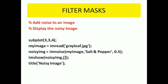Next, here we are adding noise to that image. We are applying salt and pepper noise with a noise density of 0.5, which is added to the original image, so we will get a noisy image at the output. The imshow command shows the noisy image for all values, and the title is given as 'noisy image'.